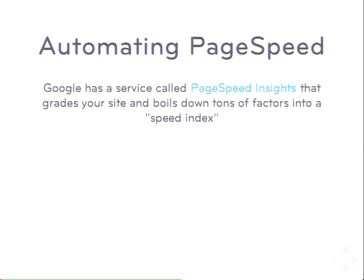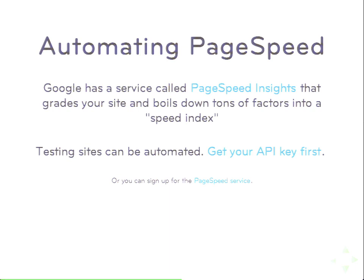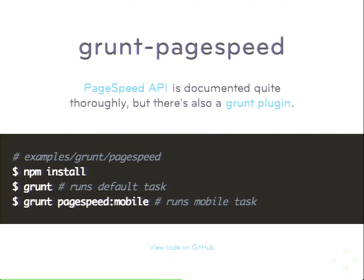Google PageSpeed is a tool that analyzes your website, checks all these different variables, and gives you a single number — a speed index — which you can aim for. You might say, as part of your development goals, 'we want to launch with a PageSpeed score of 80.' Before you can automate page speed you'll have to log into code.google.com and get an API key — they're free, and you're not going to run into the limit. They do have a pay option if you need thousands of instances, but basically you can get this for free and get running pretty quickly.